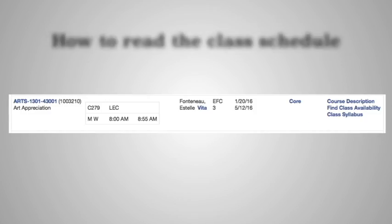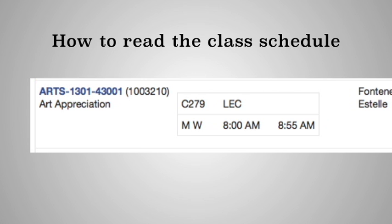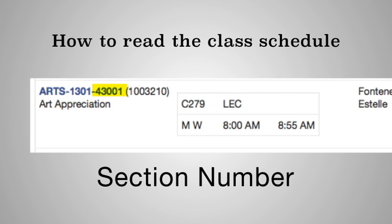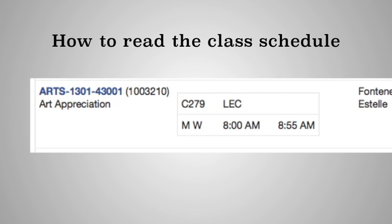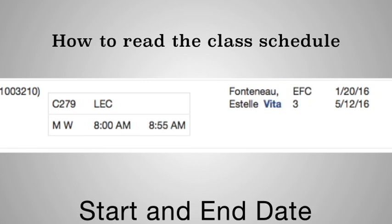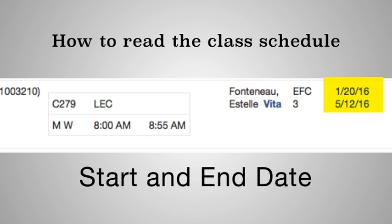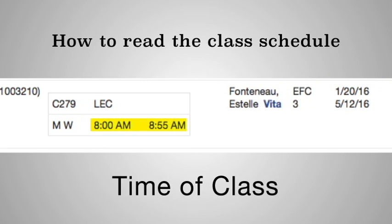Pay close attention to the notes in the schedule at the bottom of the course information — those notes will usually give you more details about the course. Now that you have a better understanding of the different types of courses, let's talk about how to read the schedule of classes. The schedule of classes lists the course number, section, room number, name of the professor teaching the course, start and end date, days when the class meets, and the time.